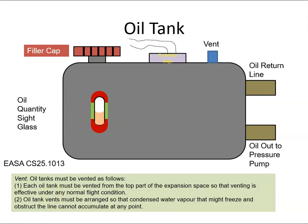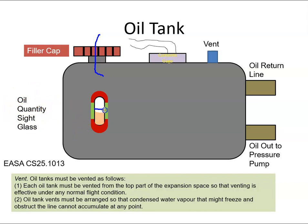The oil tank is made up of a number of components. There is a filler cap, which allows us to fill the system by removing the cap and pouring oil in. There is an oil quantity sight glass so you can see the level of oil in the tank, and it may be graduated with quantity values marked on it.